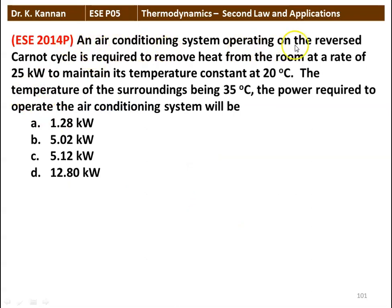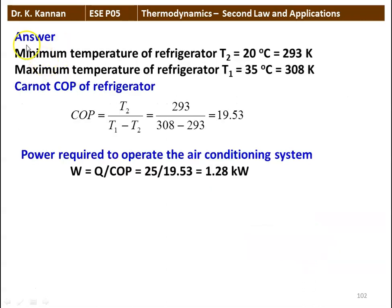Next question: an air conditioning system operating on a reversed Carnot cycle is required to remove heat from a room at 25 kW to maintain its temperature at 20°C. The surrounding temperature is 35°C. The power required will be 1.28, 5.02, 5.12, or 12.80 kilowatts. Answer: T2 = 20°C = 293 K, T1 = 30°C = 308 K. Carnot COP = T2/(T1−T2) = 293/(308−293) = 19.53. Power W = Q/COP = 25/19.53 = 1.28 kilowatts.